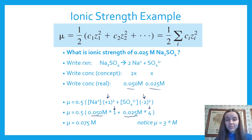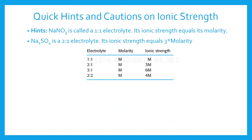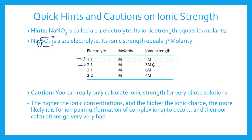Some quick hints for electrolytes: sodium nitrate is a 1:1 electrolyte and its ionic strength equals its molarity. Sodium sulfate is a 2:1 electrolyte — two sodiums per one sulfate — and its ionic strength is three times its molarity. You can memorize this chart or just go back to the formula. A caution: you can only calculate ionic strength for very dilute solutions. At higher ionic concentrations, ions may pair up and form complexes, and the calculations break down.